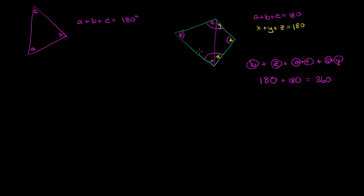So I think you see the general idea here. We just have to figure out how many triangles we can divide something into, and then we just multiply by 180 degrees since each of those triangles will have 180 degrees. Let's do one more particular example and then we'll try to do a general version — we're just trying to figure out how many triangles can we fit into that thing.